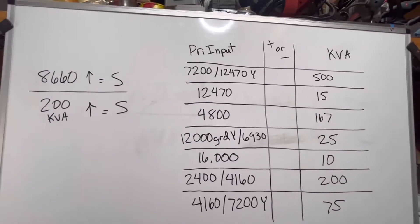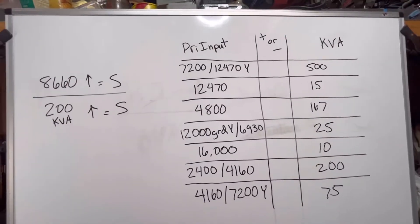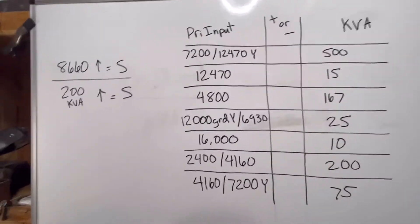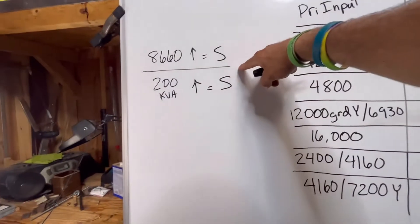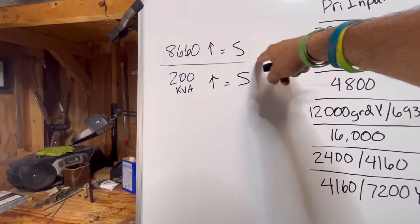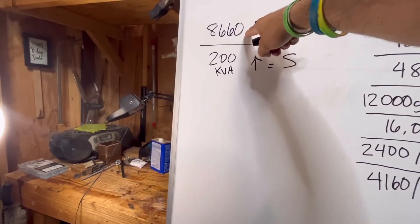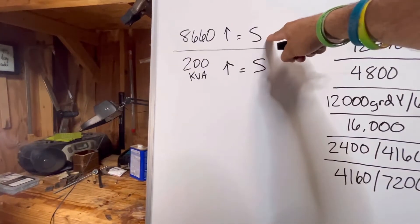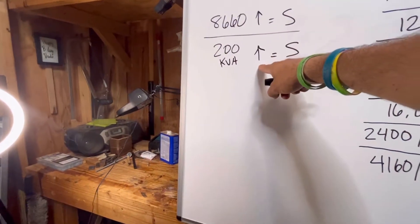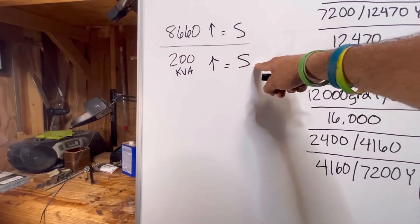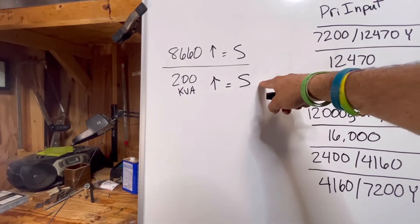Here's a little exercise if you're teaching apprenticeship class or you want to grab your apprentice, throw them in the truck, and show them some stuff. Here's a neat little drill you can go over with them. So over here I've got my qualifications. Transformers with a primary input of 8660 and above will automatically be subtractive. Transformers that are 200 KVA and above are automatically subtractive. Remember, they only have to meet one of these qualifications to be subtractive.